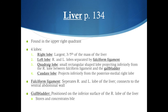We also have the quadrate lobe, which projects inferiorly from the right lobe, and the caudate lobe on the posterior side. The falciform ligament separates the two main lobes and connects the liver to the ventral, or belly, side of the abdominal wall. The gallbladder is found on the inferior side of the liver and stores and concentrates the bile that the liver produces and sends to it.